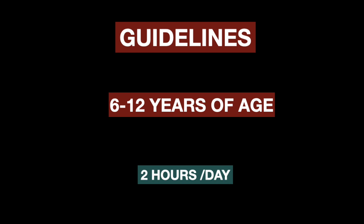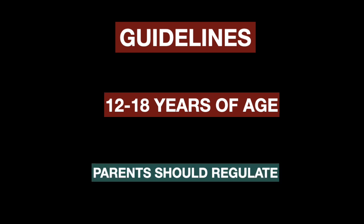Between six to twelve years, screen exposure should not go beyond two hours a day, and it should not compromise other activities — outdoor activity must continue and screen time should not eat into it. Between twelve to eighteen years, rules can be made in the household, such as not using screens two hours before going to sleep, which will ensure sleep is induced faster and the child avoids sleep problems.